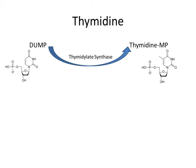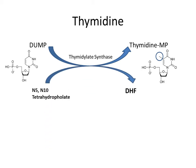Now we will see how thymidine is synthesized. Thymidine is synthesized from uridine with the help of thymidylate synthase. The structures of uridine and thymidine look similar — the only difference in the thymidine structure is this one carbon group, which comes from N5,N10-tetrahydrofolate.